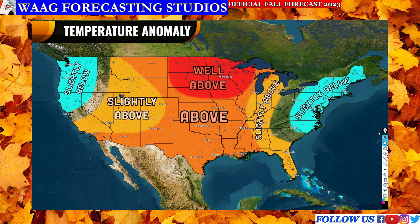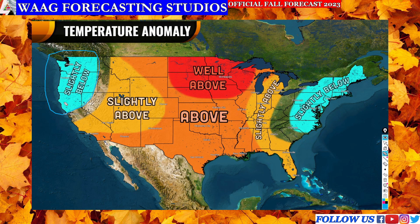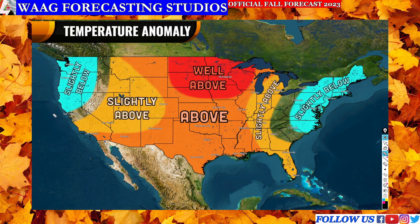Moving on to the temperature forecast. Starting with the slightly below average region over the Pacific Northwest — anywhere north of San Francisco up through Seattle and Washington — we see slightly colder conditions forecasted. We've been seeing warmer conditions lately, even heat waves when the ridge pushes westward, but that may dissipate throughout the fall. These areas are typically pretty cool this time of year given their temperate climate. We could see a couple degrees below average — nothing too out of the ordinary, but some slightly colder conditions overall.